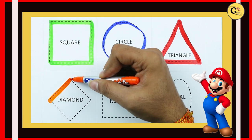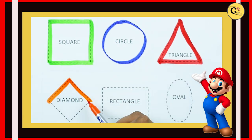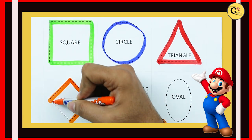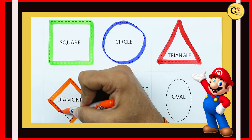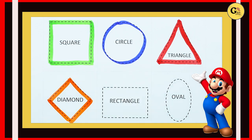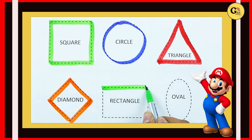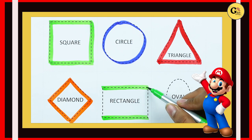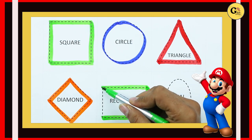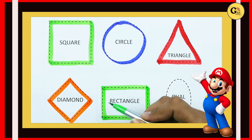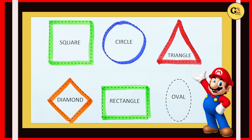One sliding line, two sliding lines, three sliding lines, four sliding lines — it's a diamond, orange color. One sleeping line, two sleeping lines, one standing line, one standing line — it's a rectangle with green color.